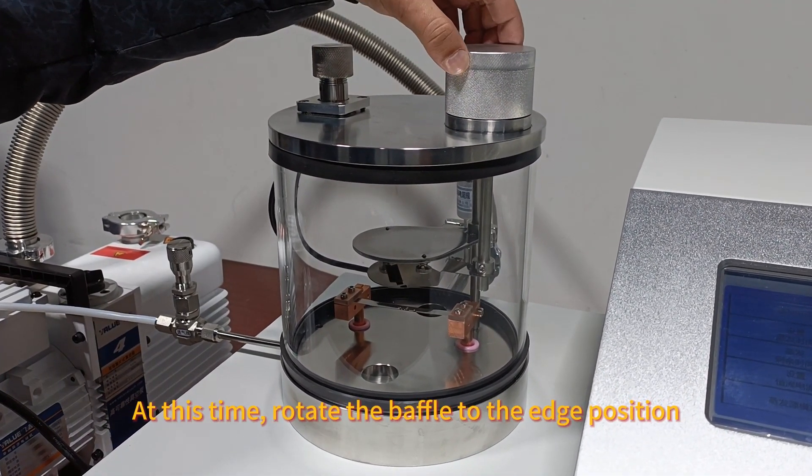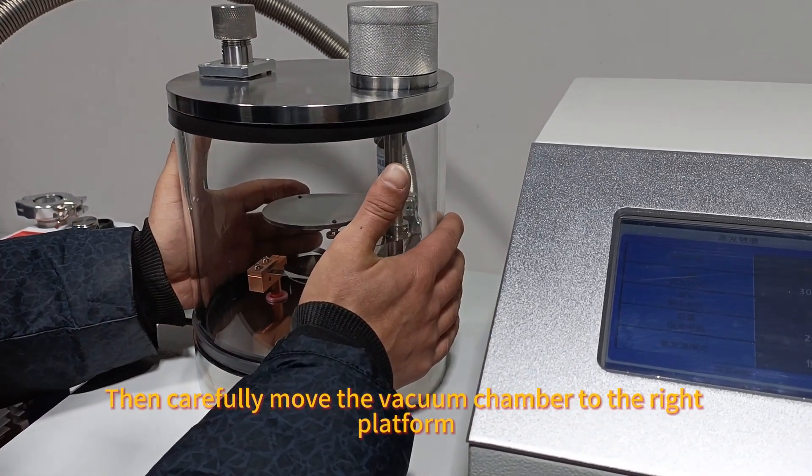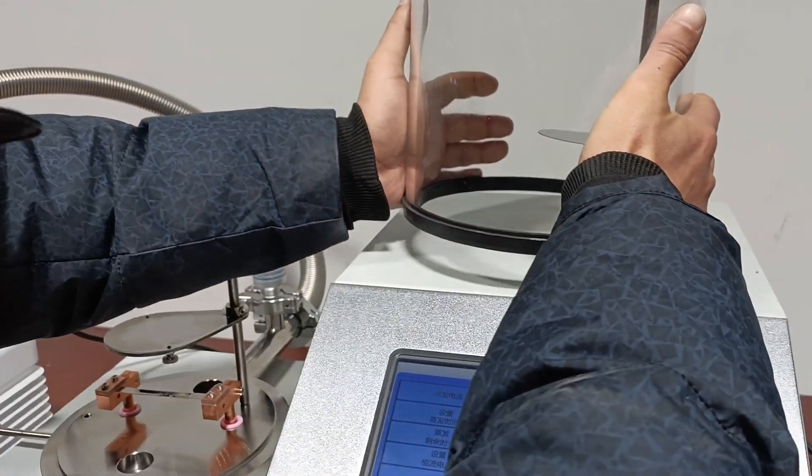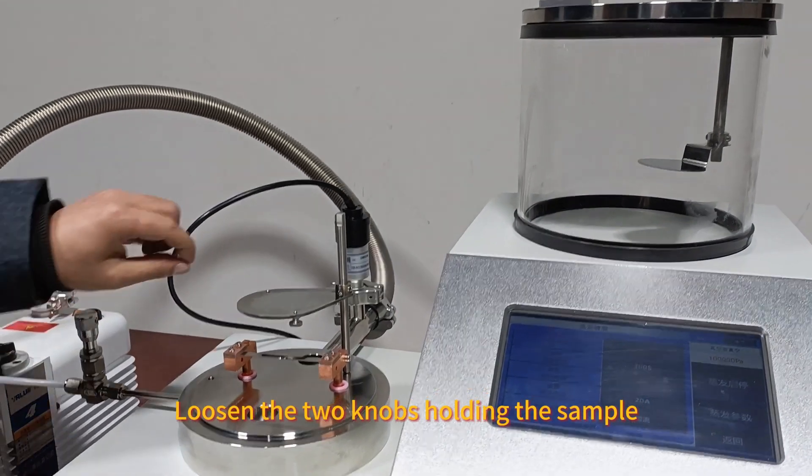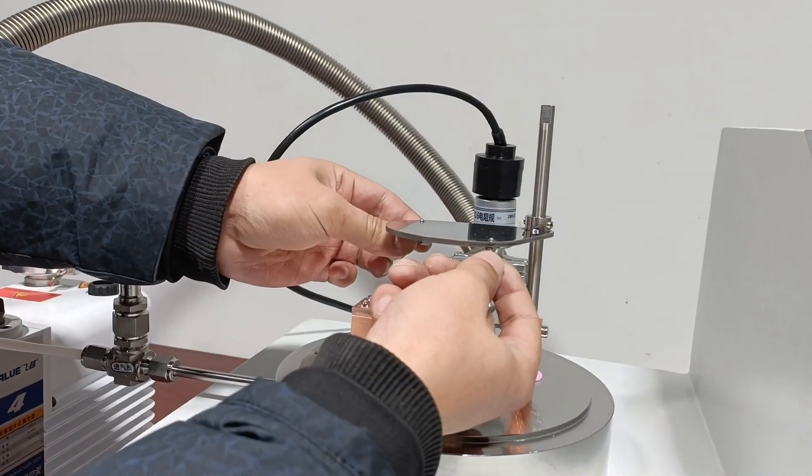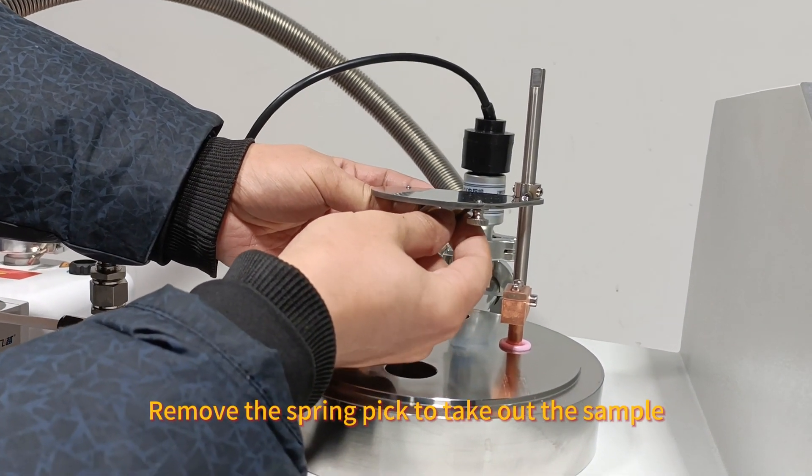At this time, rotate the bevel to the edge position. Then carefully move the vacuum chamber to the right platform. Loosen the two knobs holding the sample and remove the spring clip to take out the sample.